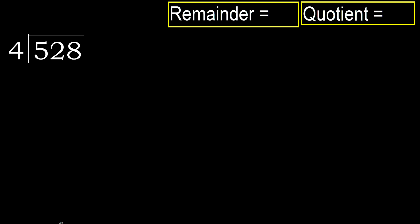528 divided by 4. 5 is not less, therefore with 5. 4 multiplied by which number is nearest to 5, but not greater. 4 multiplied by 2 is 8, 8 is greater. Multiply by 1 is 4, is not greater. Subtract. 5 minus 4 is 1.